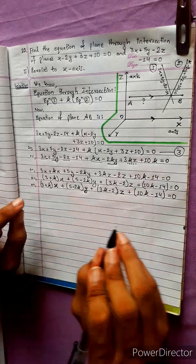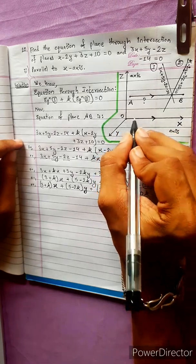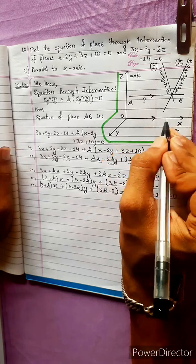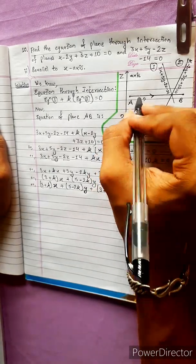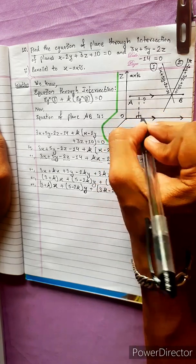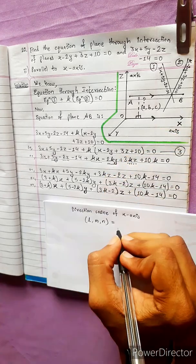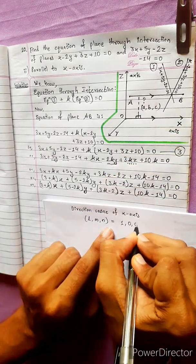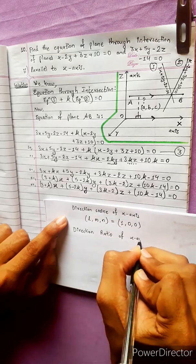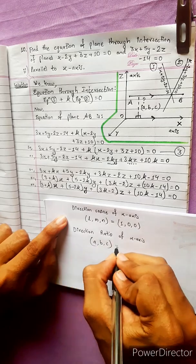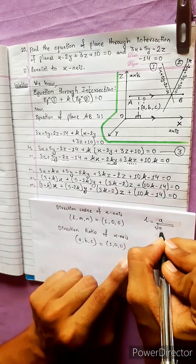Since the plane is parallel to the x-axis, and we need to find the condition for this. The direction of the x-axis is (1, 0, 0). The direction ratio of the x-axis is 1, 0, 0. This is the key condition we will apply.